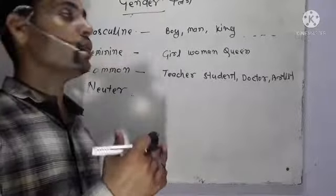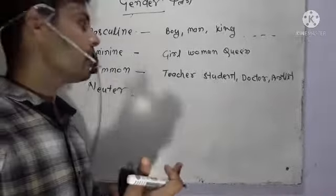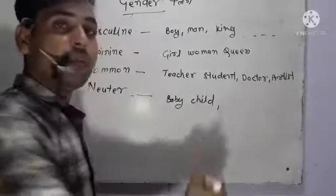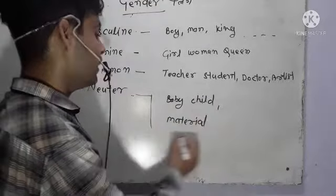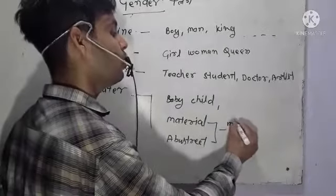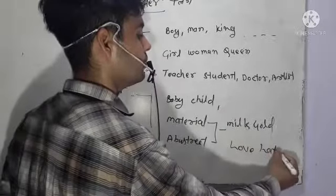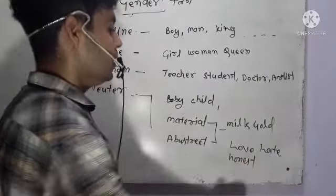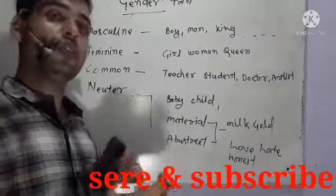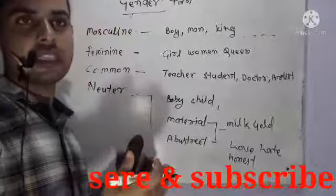As we studied in the noun, we have some material nouns and some abstract nouns. We can take examples from these: material nouns like milk and gold, and abstract nouns like love, hate, and honesty. In neutral gender, we can add things from the noun which keep their own sense — either in common, feminine, or masculine gender.